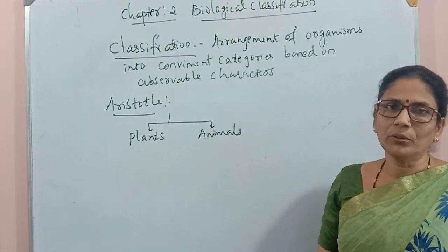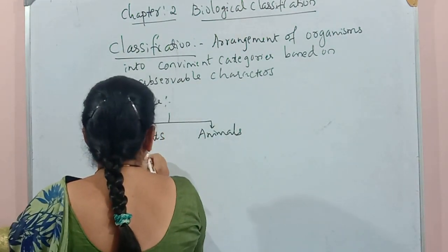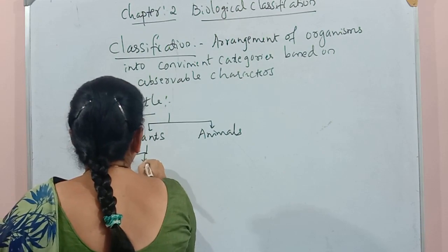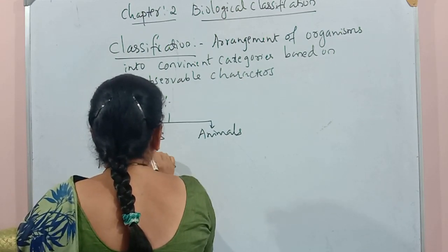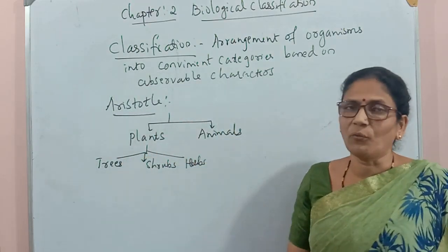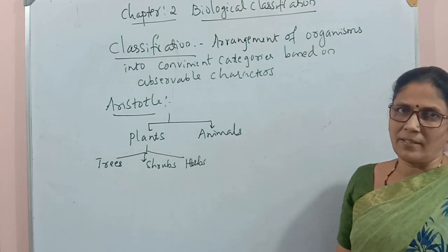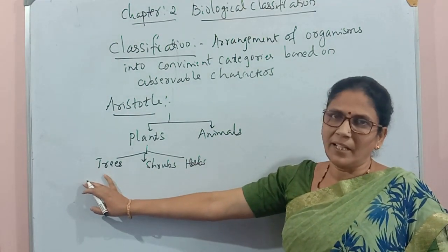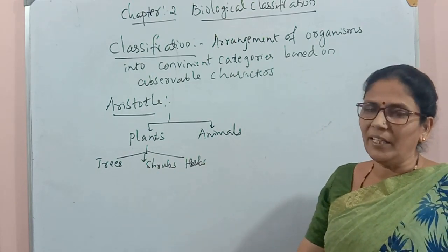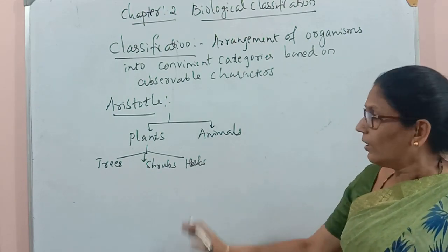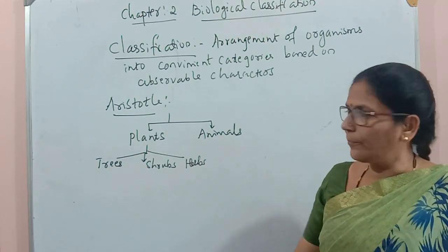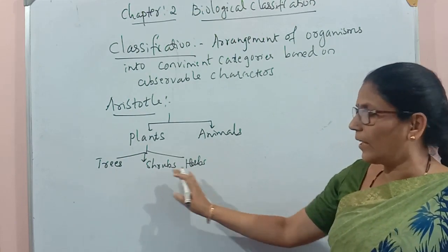Plants were further divided into three categories: trees, shrubs, and herbs. This categorization is based on the size of the plants. Huge plants are considered trees, woody middle-sized plants are considered shrubs, and very delicate tender-stemmed plants are considered herbs. So plants were classified into three groups: trees, shrubs, and herbs.